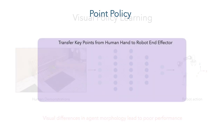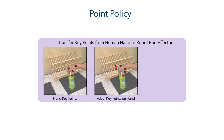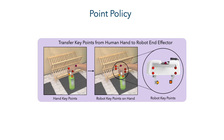Let's dive into how Point Policy works. First, a hand pose detector is used to obtain hand key points in the human video, which are then mapped to the corresponding robot key points through simple heuristics.